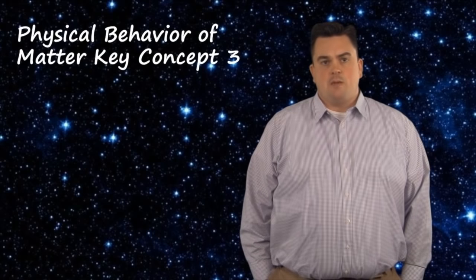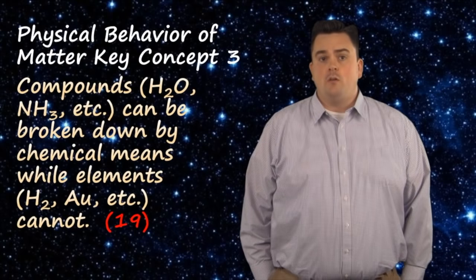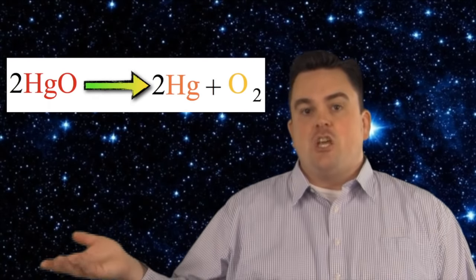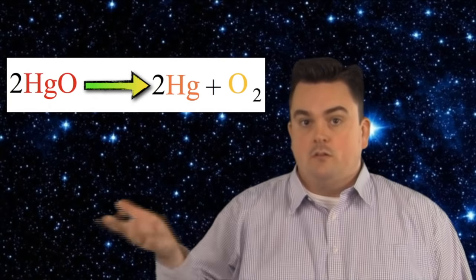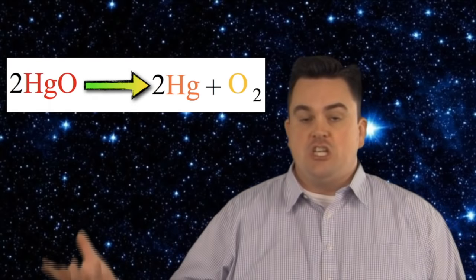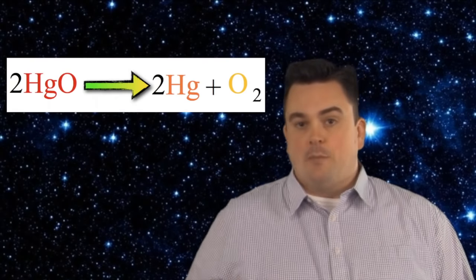Physical behavior of matter, key concept three. Compounds, H2O and NH3 for example, can be broken down by chemical means, while elements like H2 and AU cannot. We have to remember that compounds are made up of chemical combinations of those elements. So those compounds can then be broken down into those elements that form them in the first place. For example, HgO is made from Hg and O. So when it's broken down, it can be broken down into Hg and O2. And then those two themselves cannot be further broken down by chemical means.